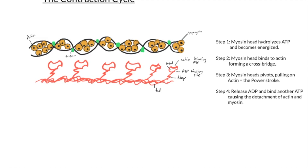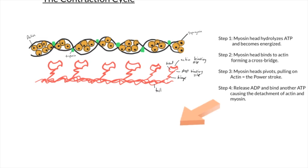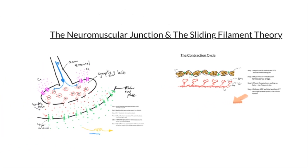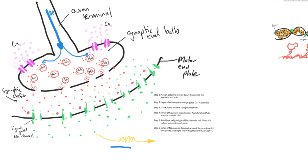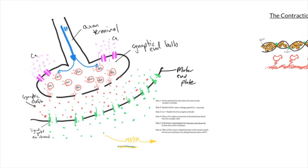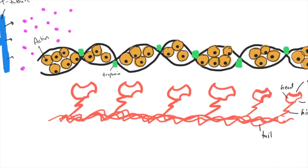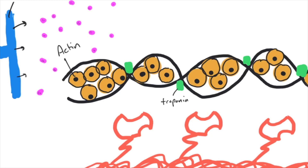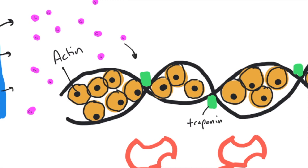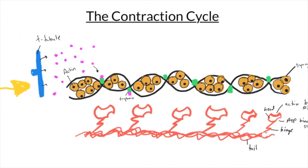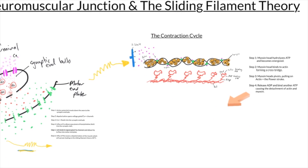Now that we've finished the four steps of the contraction cycle, let's draw it out and revisit our neuromuscular junction. Remember all that sodium flooding into the motor end plate giving us that action potential and depolarization event — that depolarization spreads all the way into our muscle. The muscle action potential travels along a transverse tubule, the T-tubule, triggering a change in the voltage-gated calcium channels, causing calcium release into the sarcoplasm. That calcium binds to troponin on the thin filament, causing a conformational shift in tropomyosin, which ultimately exposes the myosin binding site on actin.